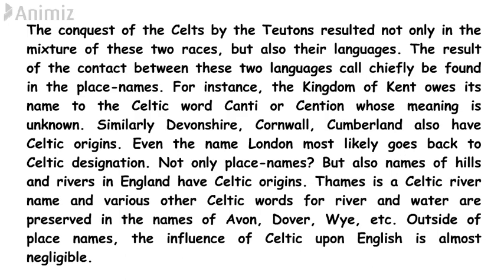Not only place names, but also names of hills and rivers in England have Celtic origins. The most popular river, the Thames, is a Celtic river name, and various Celtic words for river and water are preserved in the names Avon, Dover, and Exe. Outside of place names, the influence of Celtic upon English is almost negligible. Very few words like 'bin' (basket), 'crib,' 'brat' (cloak), and 'brock' (badger) entered English through everyday contact. Some words like 'anchor' (hermit), 'druid' (magician), 'cross,' and 'parchment' were introduced by Irish missionaries.